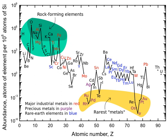The abundance of elements in Earth's crust is shown in tabulated form, with the estimated crustal abundance for each chemical element shown as parts per million by mass. 10,000 ppm equals 1%.